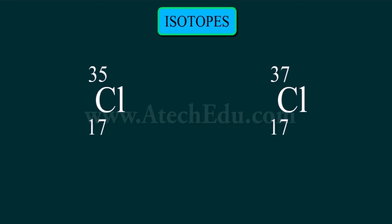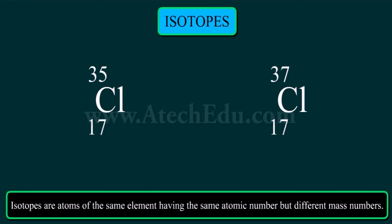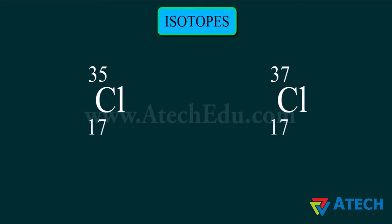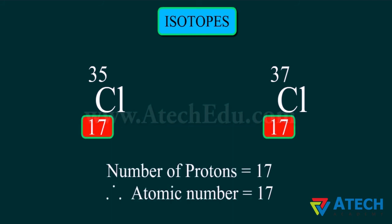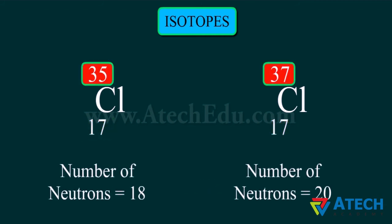Isotopes are atoms of the same element having the same atomic number but different mass numbers. That means isotopes contain the same number of protons and electrons — the only difference is in the number of neutrons. For example, all chlorine atoms contain 17 protons, so the atomic number is 17, but some chlorine atoms have 18 neutrons while some have 20, giving two isotopes with mass numbers 35 and 37 respectively.